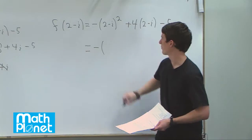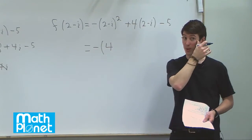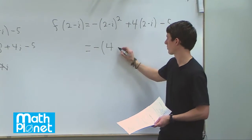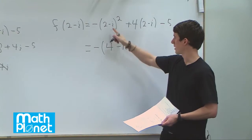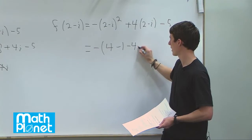So this is still minus out front. Then we have 2 times 2 is 4. We have negative i times negative i, which is positive i squared. Positive i squared is just negative 1 again. Then we have minus 2i, minus 2i again gives us minus 4i.